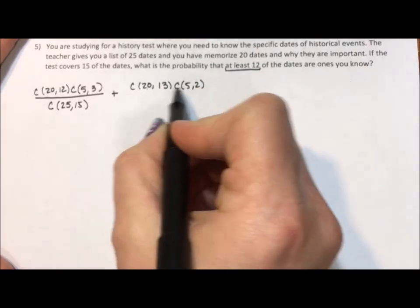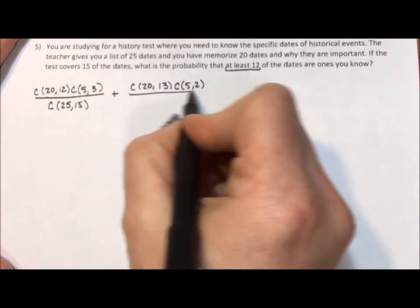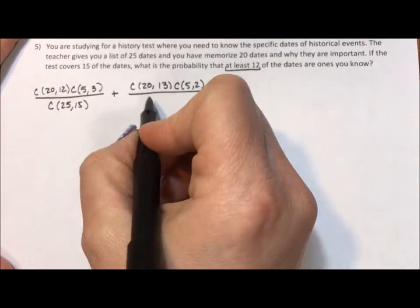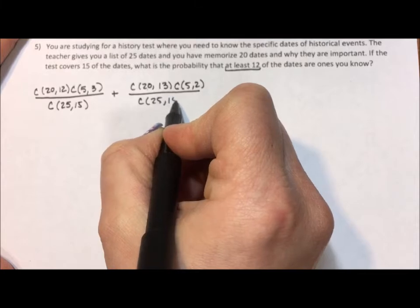20 plus 5 is 25. 13 plus 2 is 15. That's the 15 on the test divided by 25 taken 15 at a time.